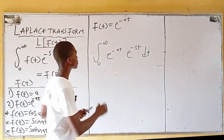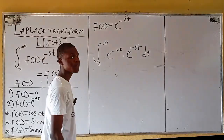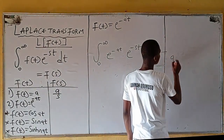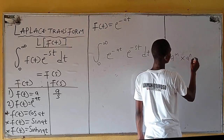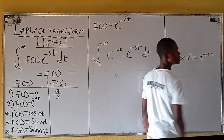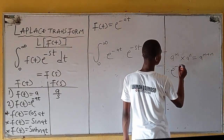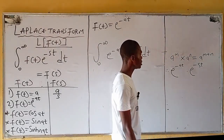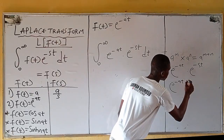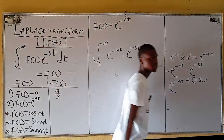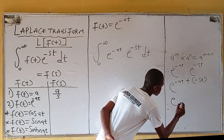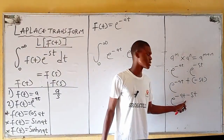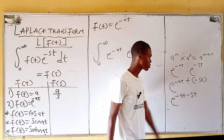The first thing that should come to your mind is to apply the law of indices: a^m multiplied by a^n equals a^(m+n). Therefore, e^(-at) multiplied by e^(-st), by the law of indices, becomes e^((-at) + (-st)), which simplifies to e^(-at - st).